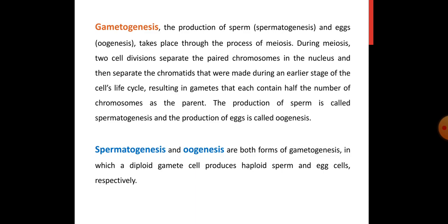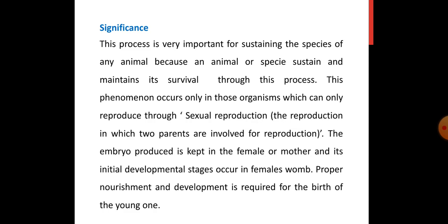Diploid gamete cells produce haploid sperm and egg cells — that is, the diploid cell produces haploid sperm with half the chromosome number. What is the significance of this? The significance is very important because this process is vital for sustaining the species of any animal, as a species sustains and maintains its survival through this process. This phenomenon occurs only in those organisms which reproduce through sexual reproduction.